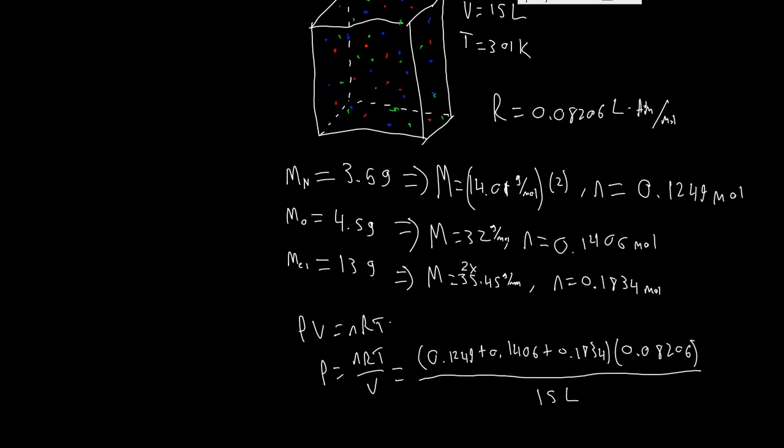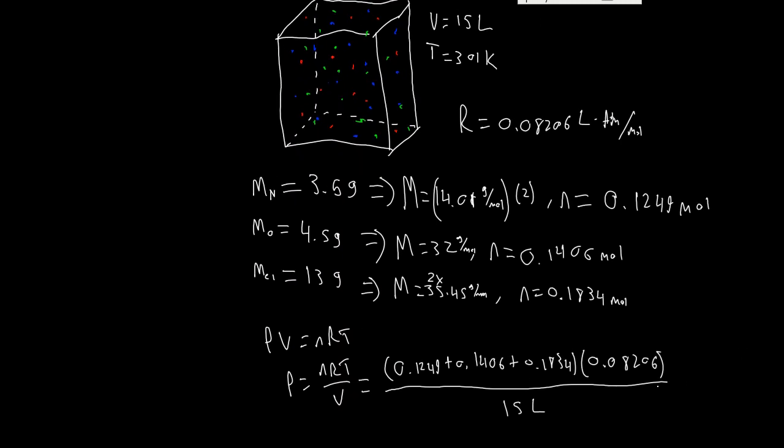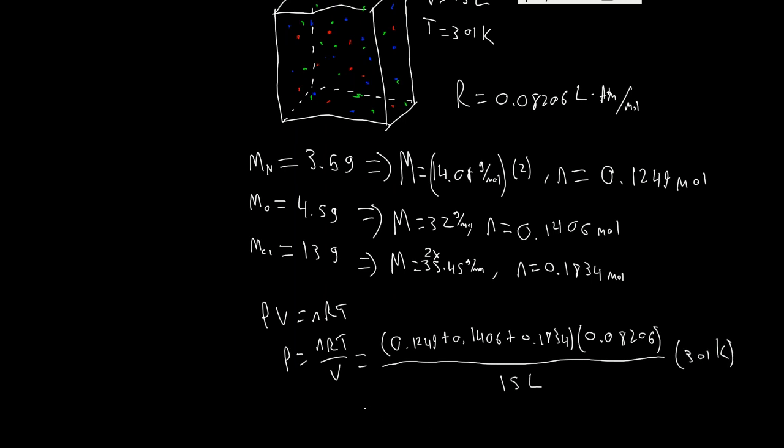And multiply that by 301 Kelvin. PV equals NRT. We're going to get this equal to... We get approximately 0.74 atmospheres. 0.74 atmospheres. And that is the pressure of each of these.